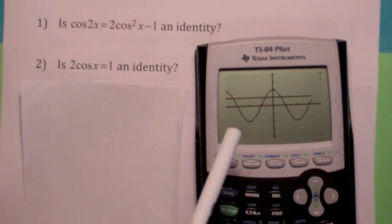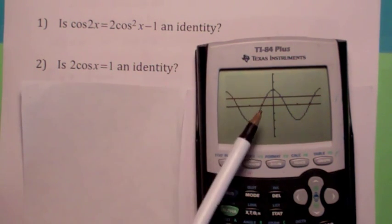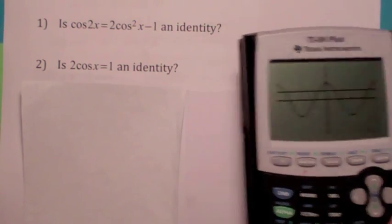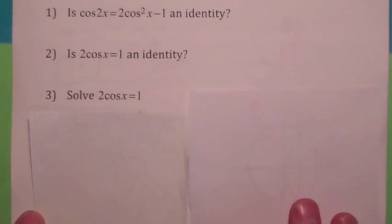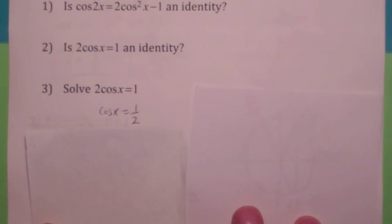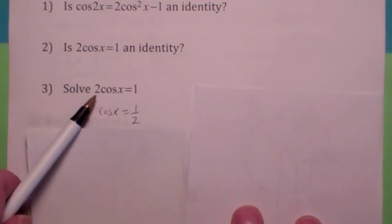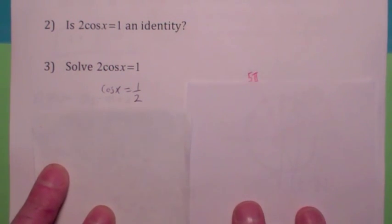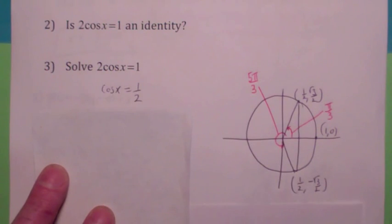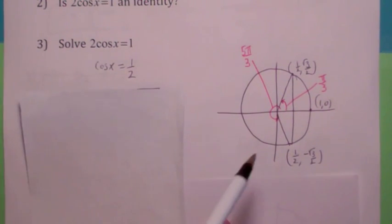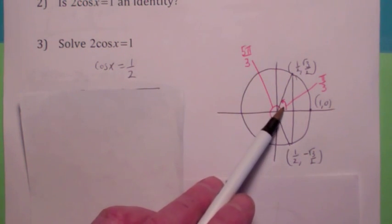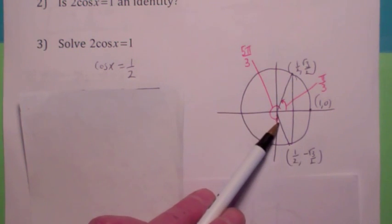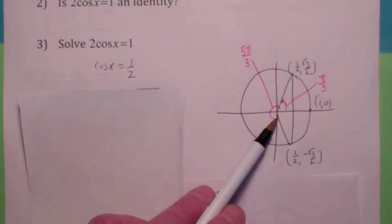The question we're going to look at in this section is: when is the equation true? In other words, where do the graphs cross? We could solve it graphically using the intersect feature, but we're going to solve it algebraically here. If you divide by 2, you get cosine x by itself equal to 1 half. There is certainly an angle in the first quadrant whose cosine is 1 half — that angle is pi over 3. There's also one in the fourth quadrant whose cosine is 1 half: 5 pi over 3.